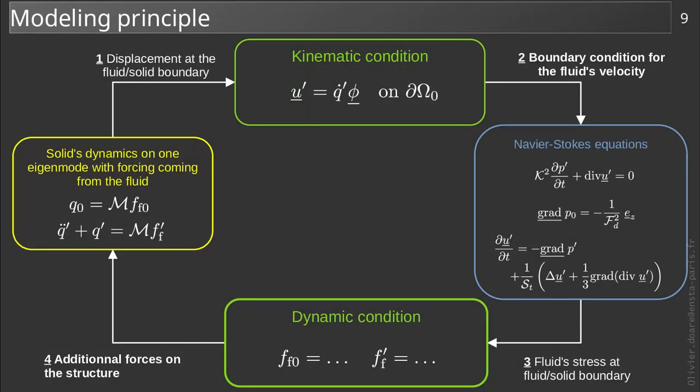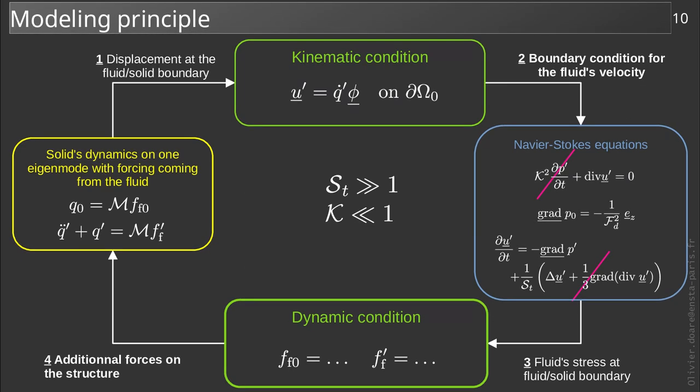To obtain the stress to be projected, we need to solve the Navier-Stokes equations at order 1 with the kinematic conditions as boundary conditions. We will do this by neglecting the viscous effects and the compressibility effects. That is to say by considering the Stokes number large and the compressibility parameter small.